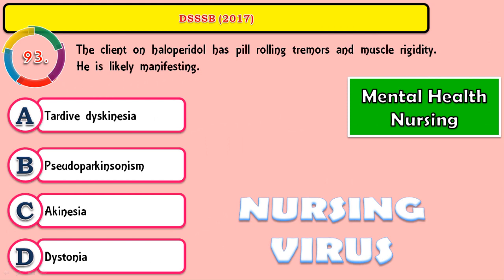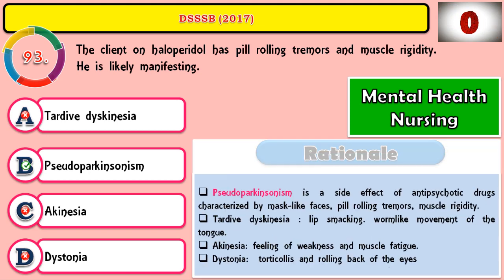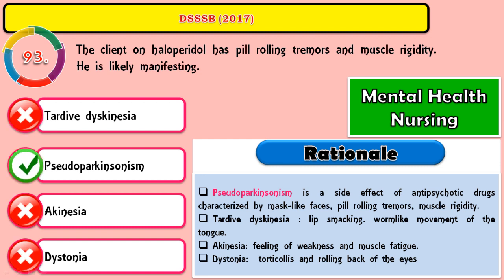Question 93: The client on haloperidol has pill-rolling tremors and muscle rigidity — he is likely manifesting which of the following symptoms? The correct answer is pseudoparkinsonism. Pseudoparkinsonism of antipsychotic drugs is characterized by mask-like face, pill-rolling tremors, and muscle rigidity. Other EPS symptoms that belong to antipsychotic drugs include tardive dyskinesia and torticollis.